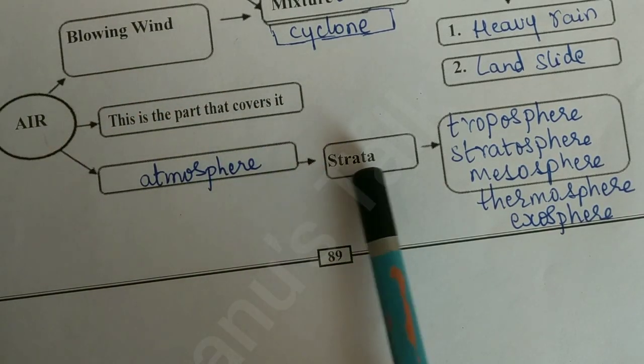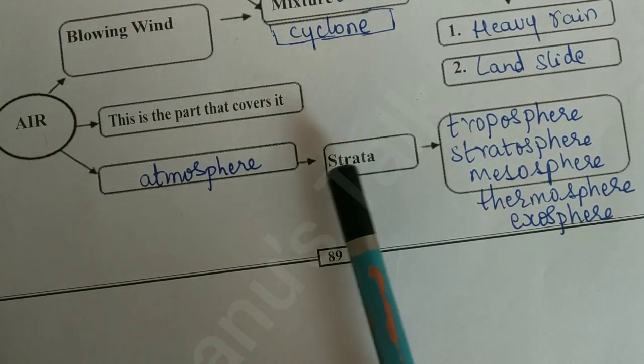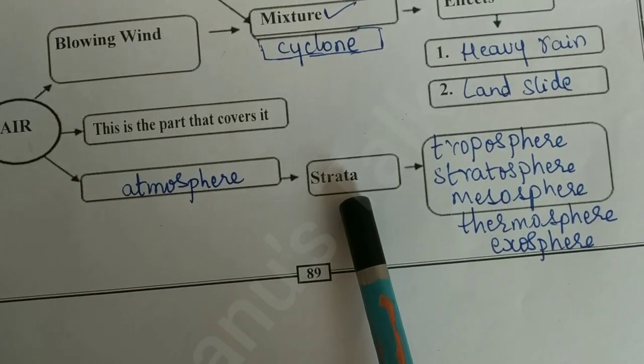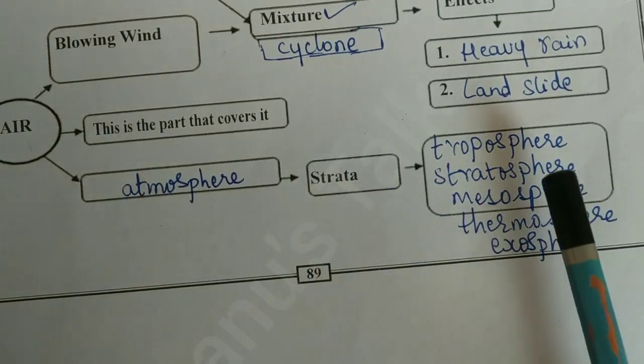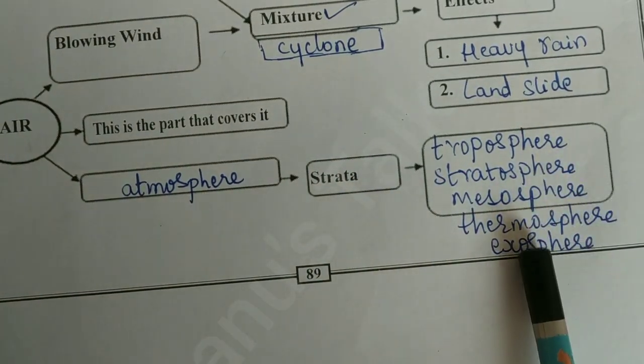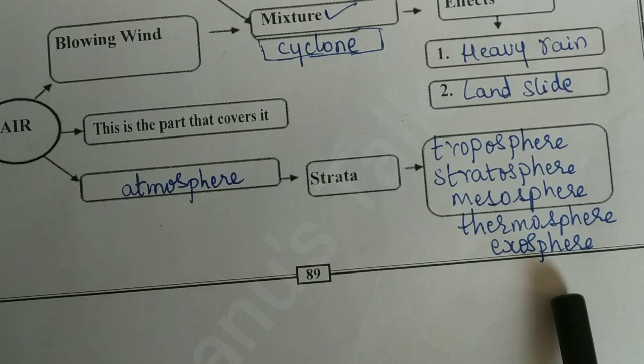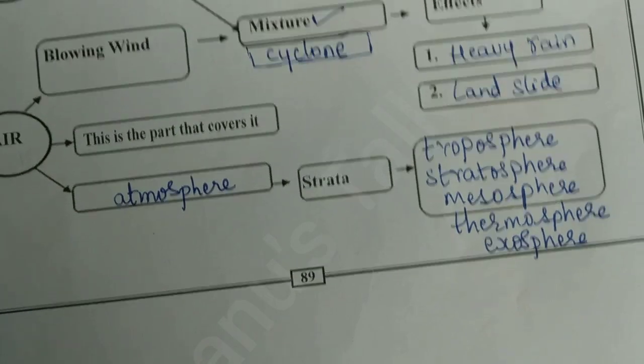The strata — that is, the layers of air — are: troposphere, stratosphere, mesosphere, thermosphere, and exosphere.